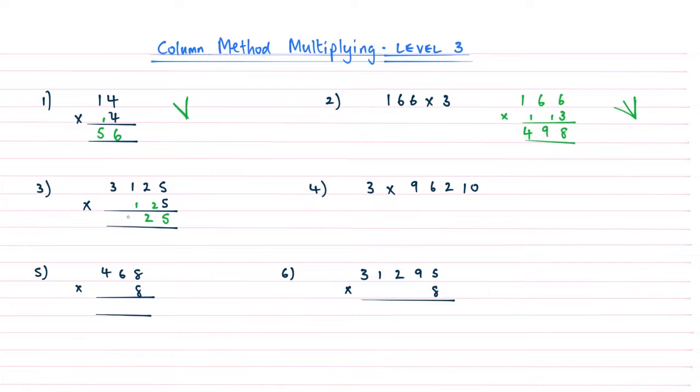1 times 5 is 5, add that 1 gives me a 6, and then 3 times 5 at the end there is 15. So because it's a two-digit number, we can then write into the preceding column there. So 15,625 on that one.